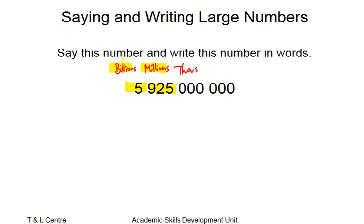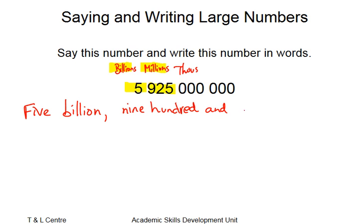So we've got 5 billion, 925 million. There's no thousands, no hundreds, tens or ones. So that makes this easy — this is simply 5 billion, 925 million. So writing that down, it's 5 billion, nine hundred and twenty-five million.